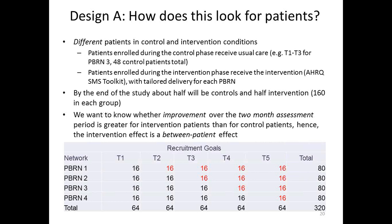Patients enrolled during the control phase receive usual care, and patients enrolled during the intervention phase receive the intervention. The intervention patients are highlighted in red in the table. An important point in this design is that if you don't meet recruitment goals early on or later on, you won't have the right number of controls and intervention patients, so it's really important to keep practices on target. What we wanted to know was whether improvement over that two-month assessment period was greater for the intervention patients than for the control patients. So the intervention effect here is a between-patient effect.